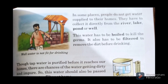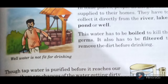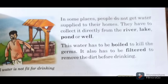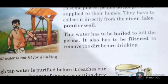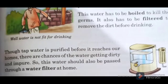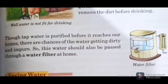In some places, people do not get water supplied to their homes. They have to collect it directly from the river, lake, pond or well. Well water is not fit for drinking — it must be dirty. This water has to be boiled to kill the germs. It also has to be filtered to remove the dirt before drinking. Though tap water is purified before it reaches our homes, there are chances of the water getting dirty and impure, so this water should also be passed through a water filter at home.